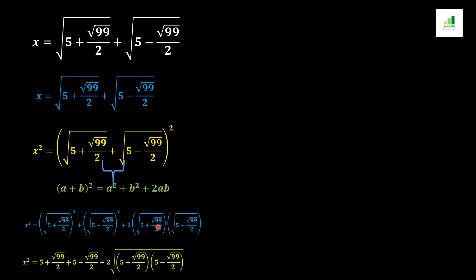In the next step, the square and the square root cancel together, so (5 + √99)/2 comes out from the first term, and similarly (5 − √99)/2 comes out from the second term. The factor of 2 remains, and both values are written inside a single root for the multiplication part.